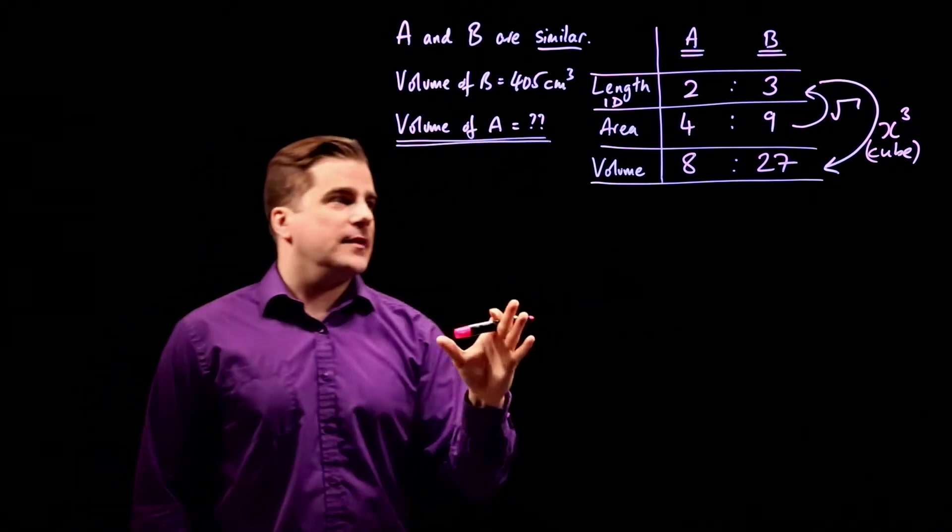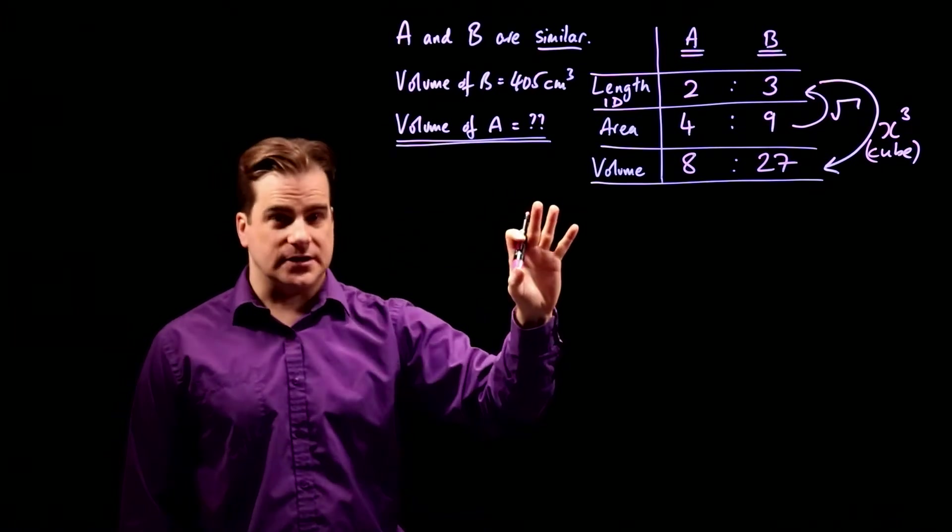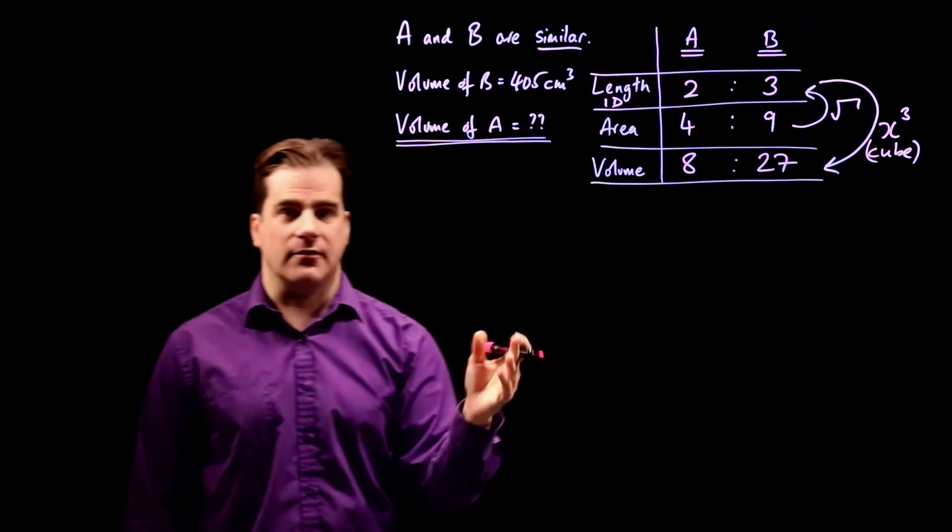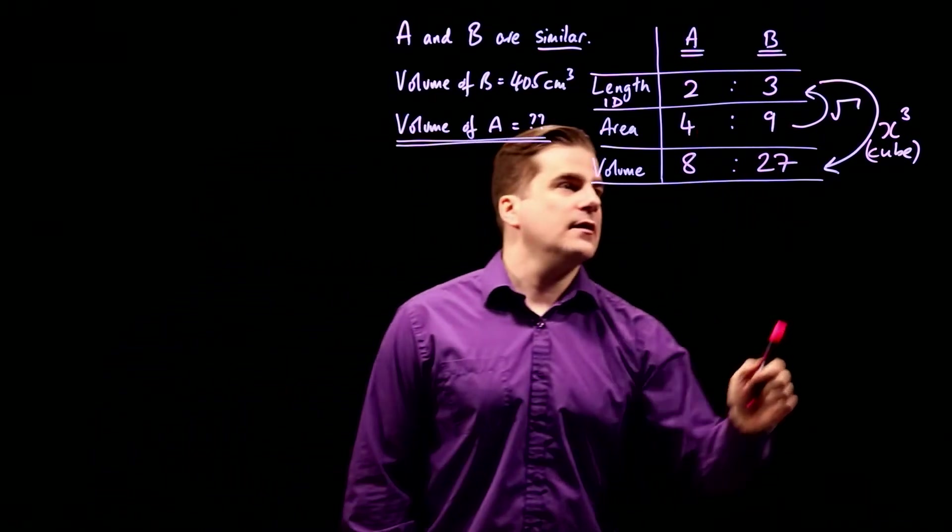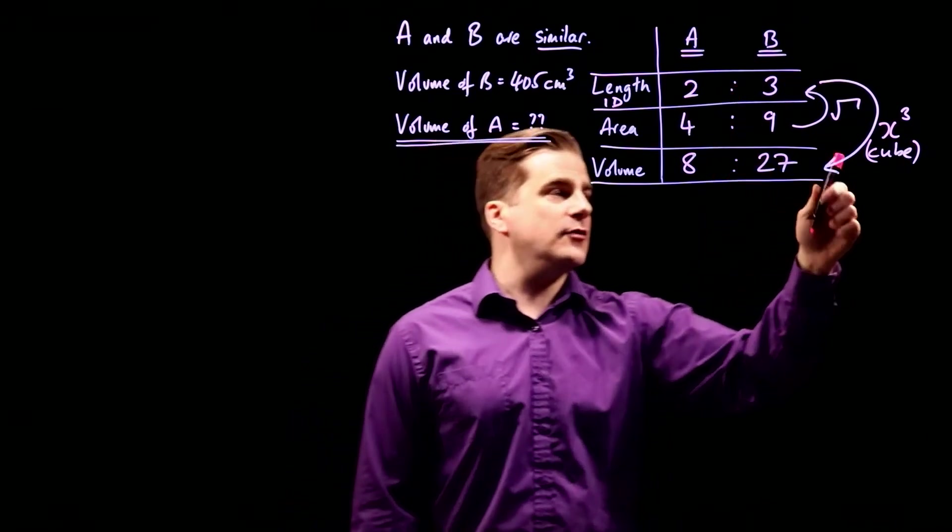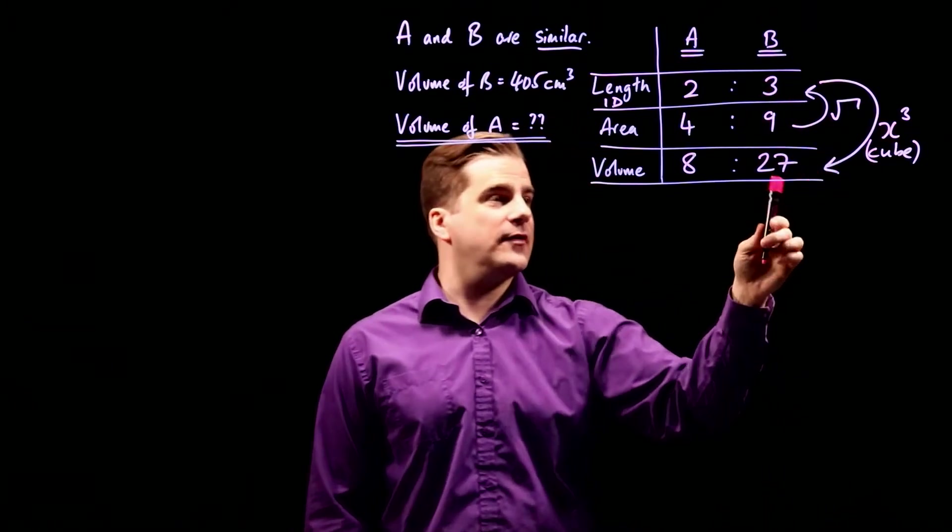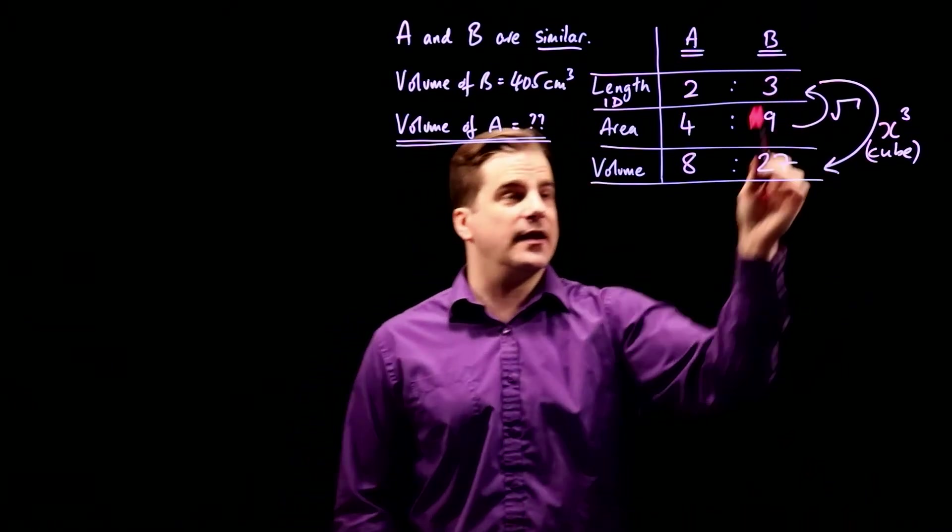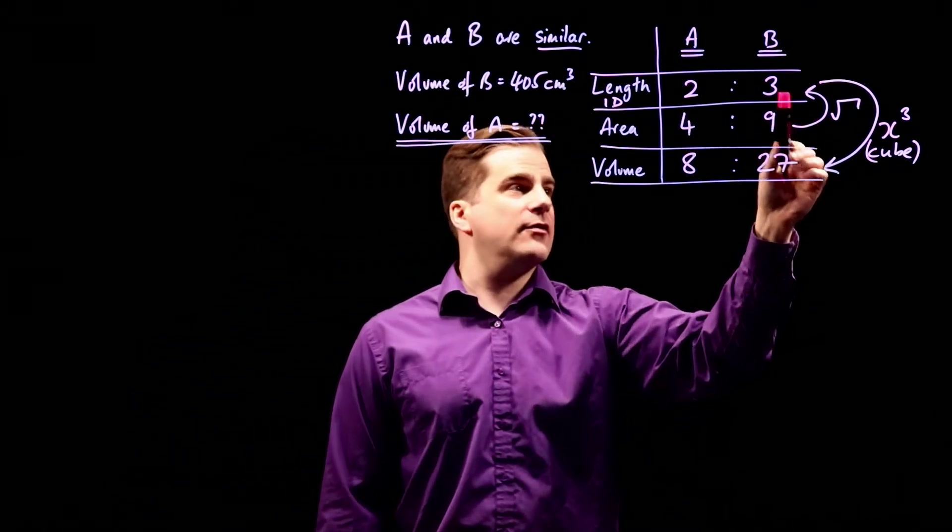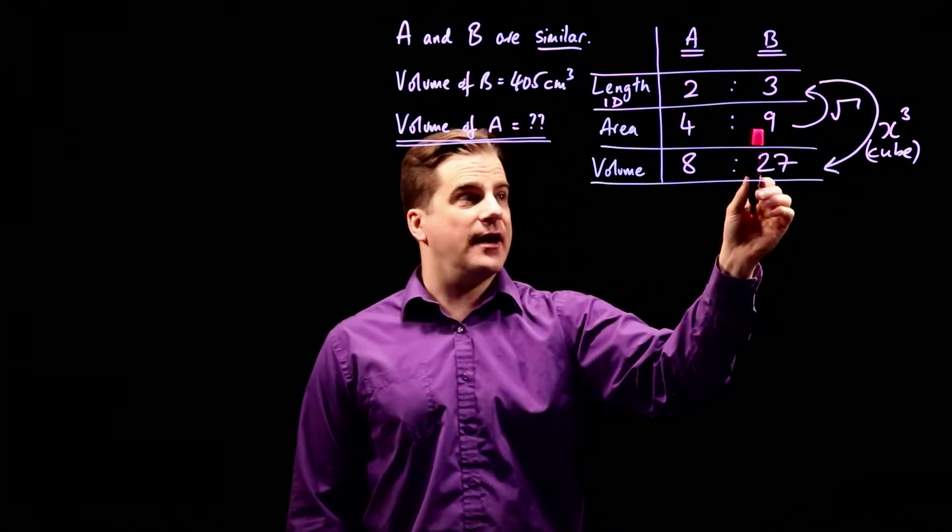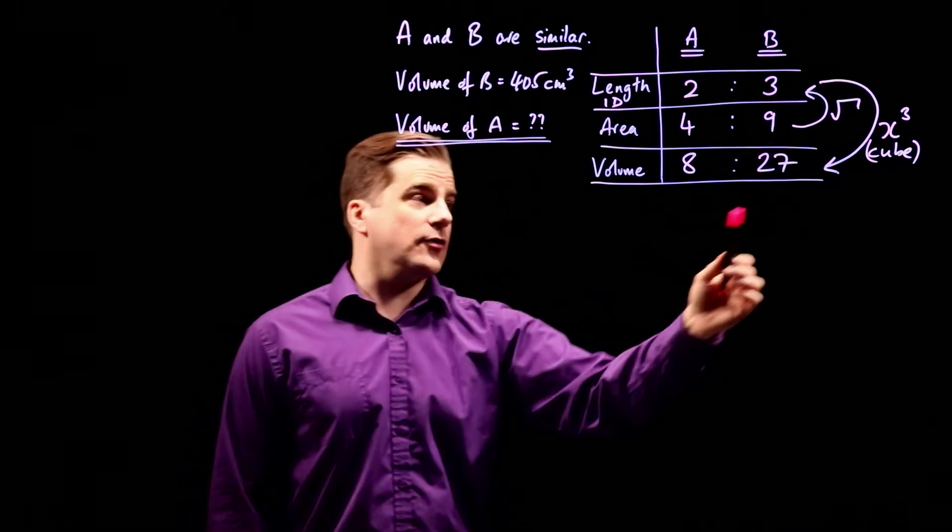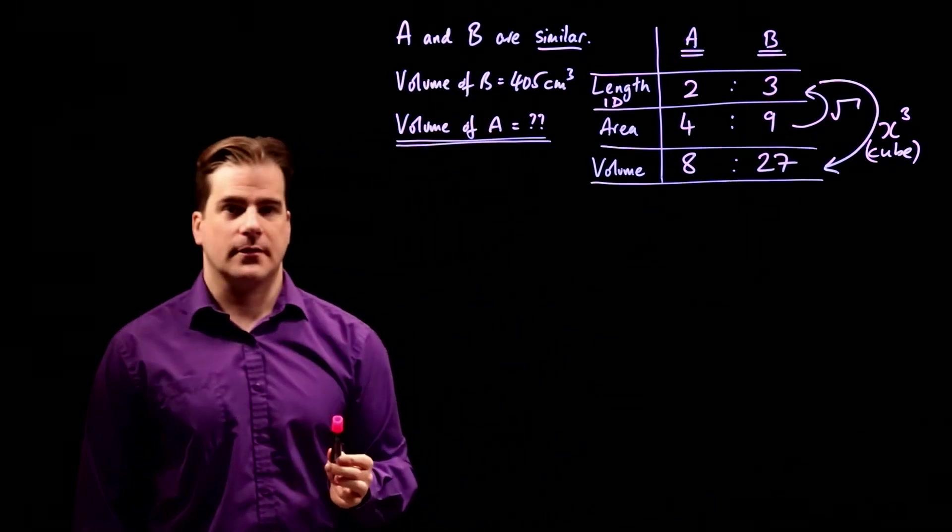So likewise, if you were handed a similar question, but maybe they gave you the volumes, and you had to find out the areas or something. To go from the volume to the length, you do the opposite. If you go from there to there, you cube it. But if you go from there to there, you will take the cube root. Likewise, going from area to length, you square root, but going from length to area, you would square it. As you can see, three squared is nine, or the cube root of 27 is three.